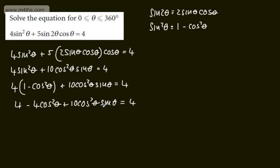So cancelling the 4's, I can now write this as 10 cos squared theta multiplied by sine theta minus 4 cos squared theta and that will be equal to 0.